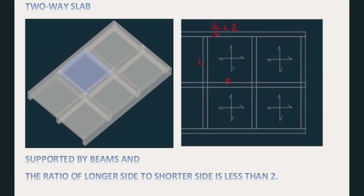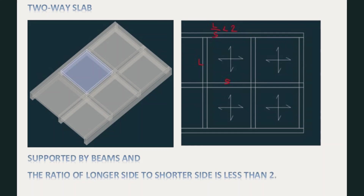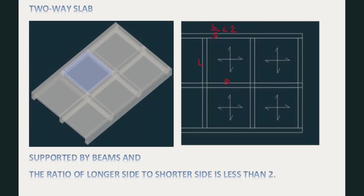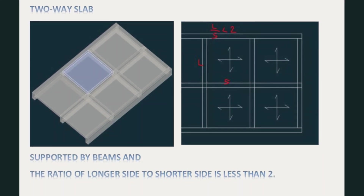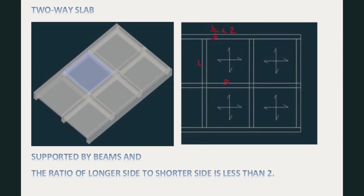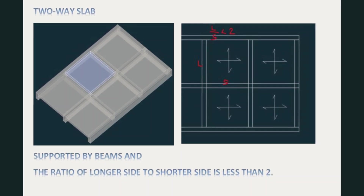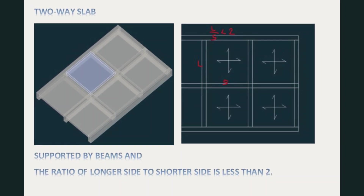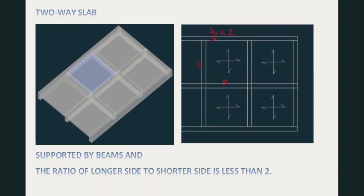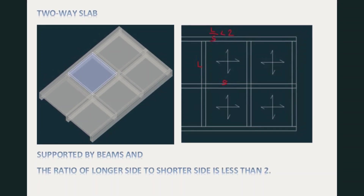The second type of slab is a two-way slab. A slab is two-way when it's supported by beams and the ratio of the longer side to the shorter side is less than two. So if this slab is loaded, it will transfer the loads to the beams at all four sides.